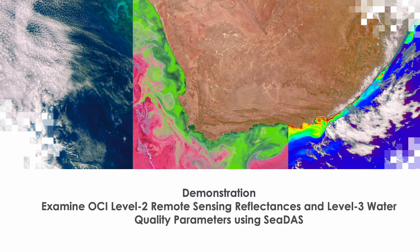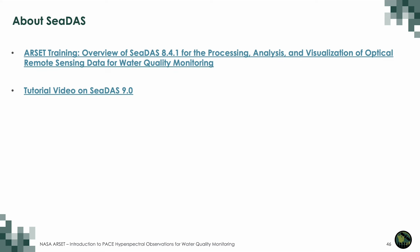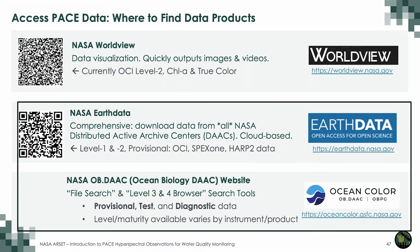Next, we are going to have a short demonstration of how to examine OCI Level 2 and Level 3 data using CDAS. CDAS, as Morgan mentioned, is a NASA software for processing optical remote sensing data. Here is an RSET training from earlier this year about overview of CDAS 8.4.1 with details about processing, analysis, and visualization of optical remote sensing data, and here is the tutorial on CDAS latest version 9.0.1. We are going to learn how to download Level 3 and Level 2 OCI data and examine them using CDAS.